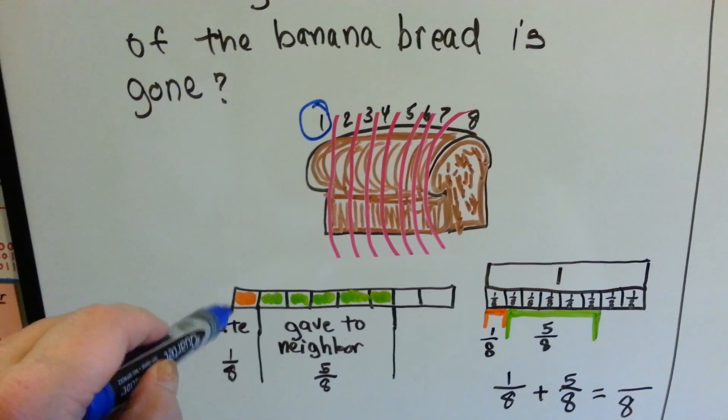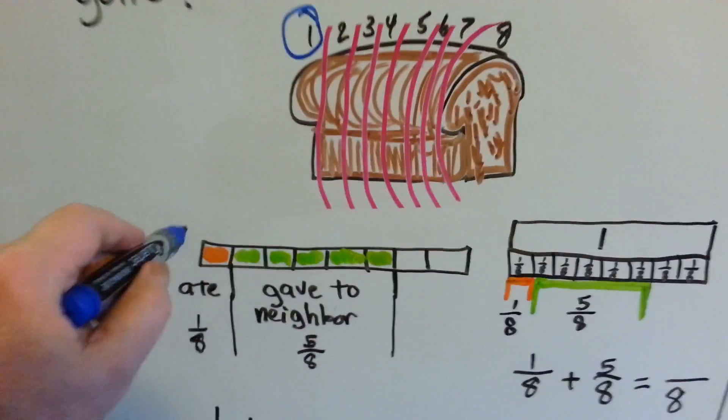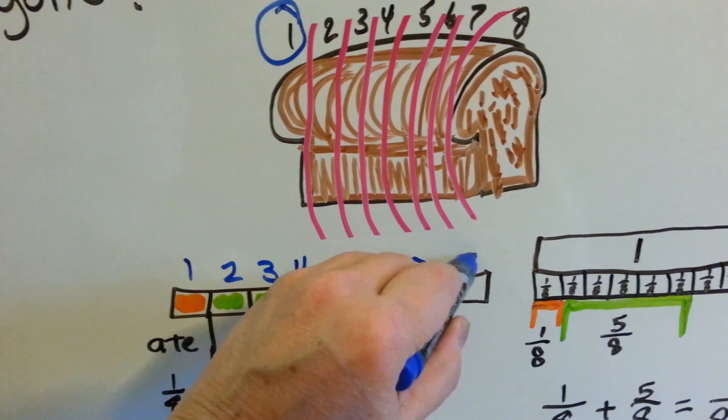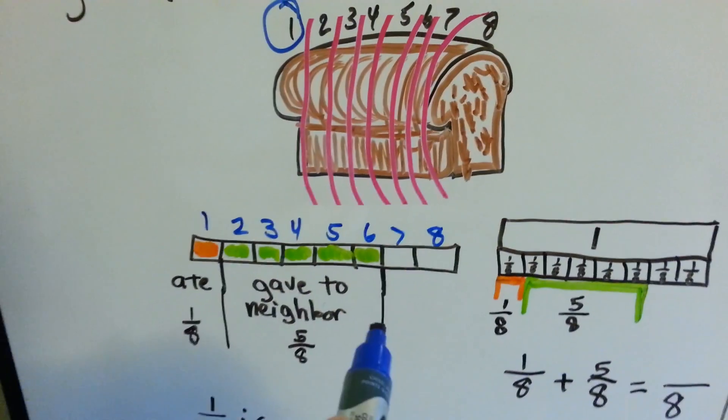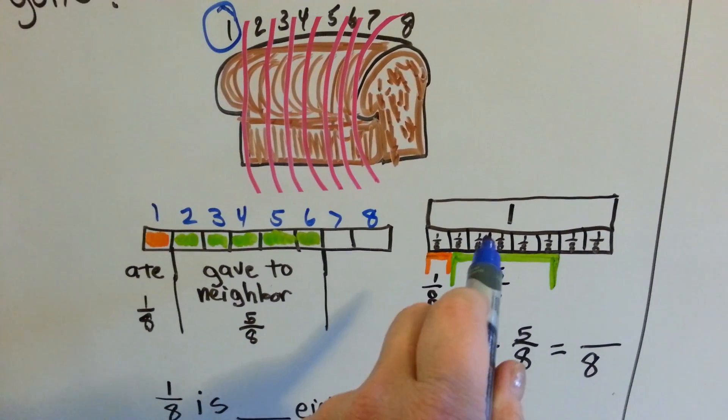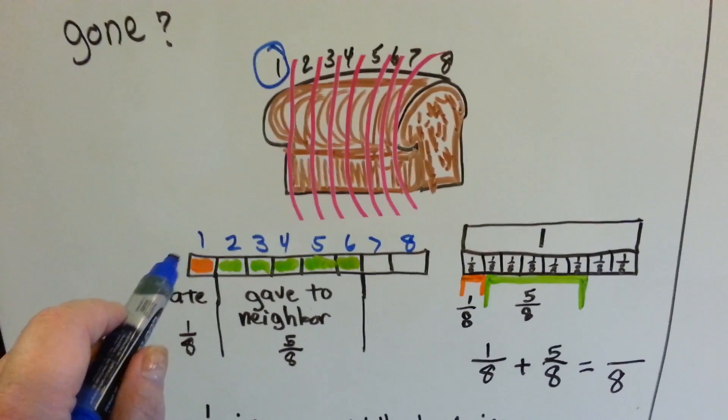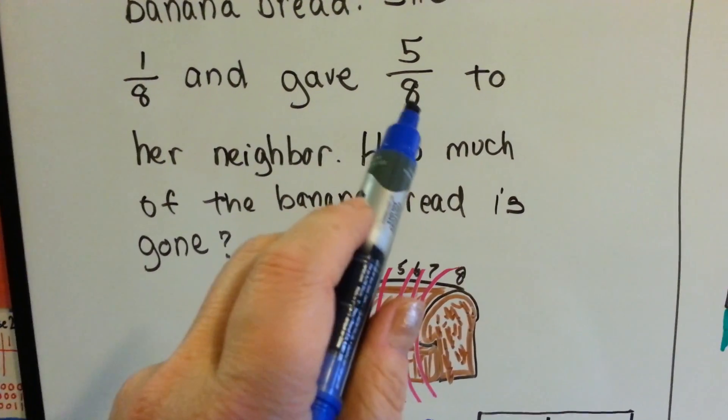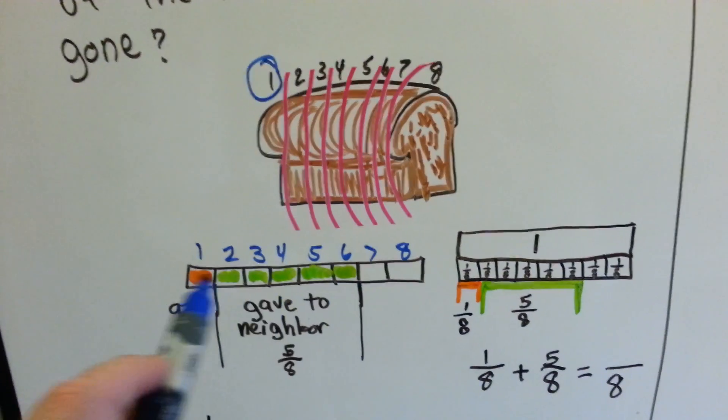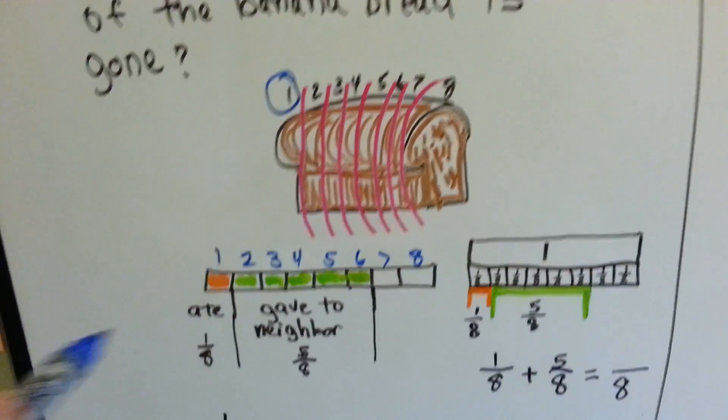So here's the banana bread and it was cut into 8 slices and she ate one of them. She ate one of the slices. So here's all 8 pieces, one, two, three, four, five, six, seven, eight. It was cut into 8 pieces and each piece is 1 eighth. It's a unit fraction. If she gave 5 eighths to her neighbor and she ate 1 eighth, how much of the banana bread is gone?